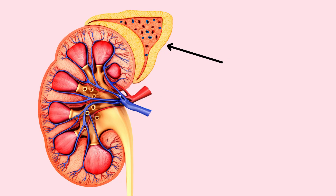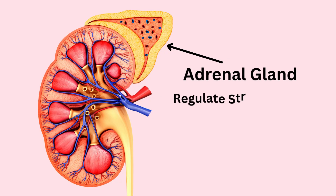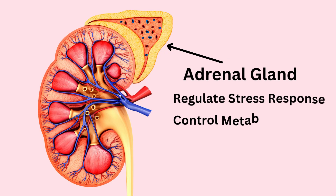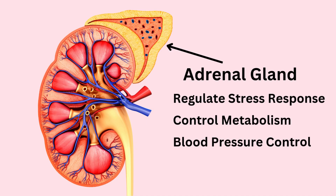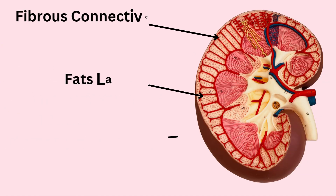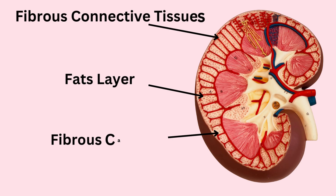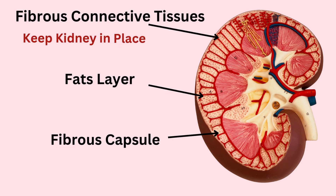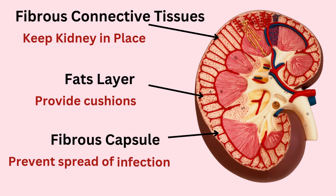On top of each kidney there is an adrenal gland, not related to the urinary system, but it releases hormones to control different body functions. Three layers of connective tissues and fats surround the kidneys, securing them in place, providing cushioning, and preventing the spread of infection.